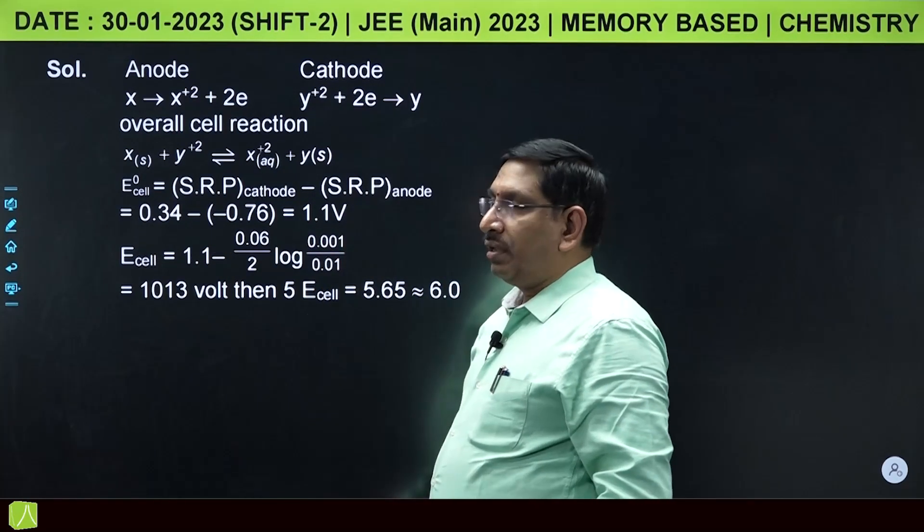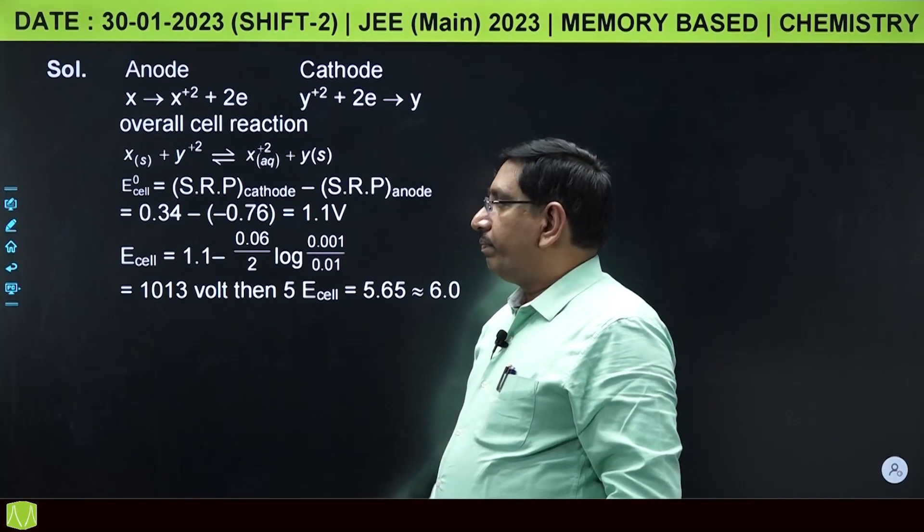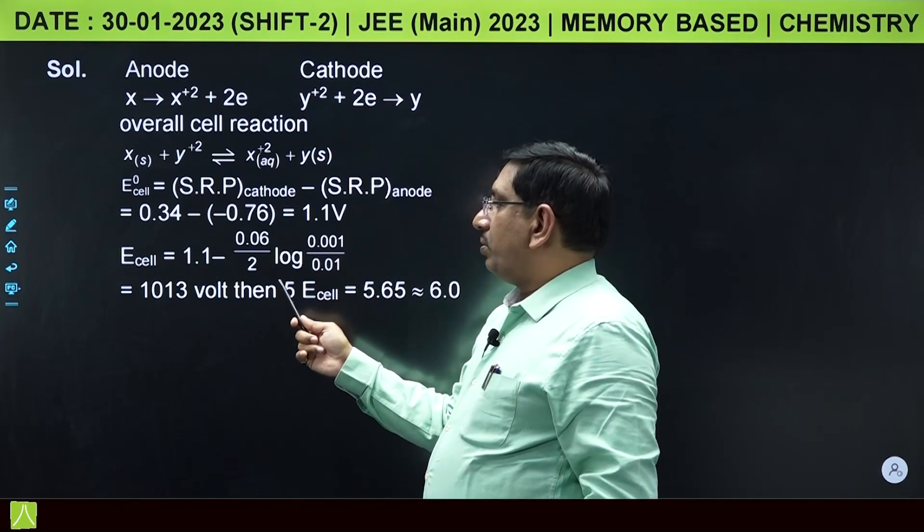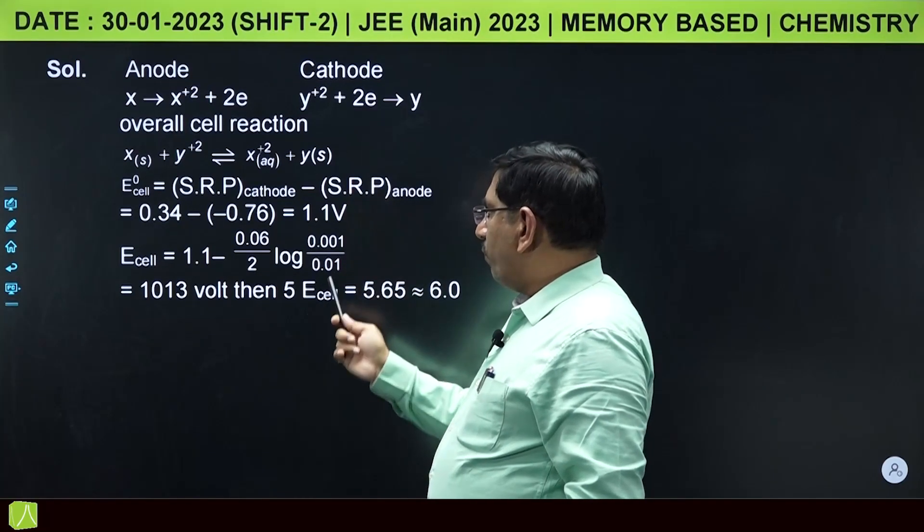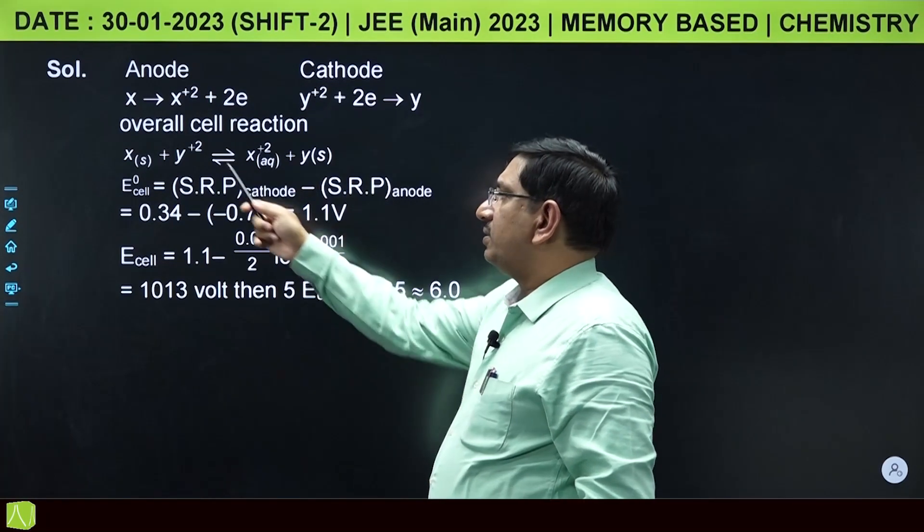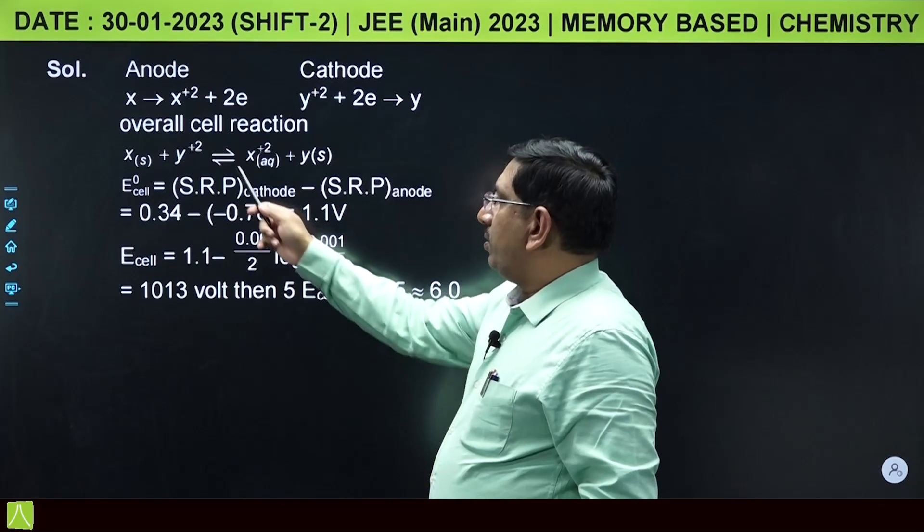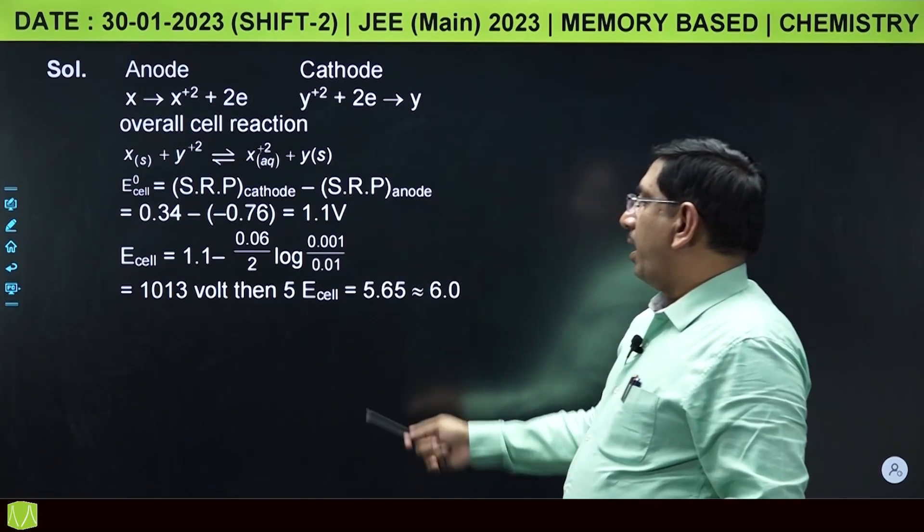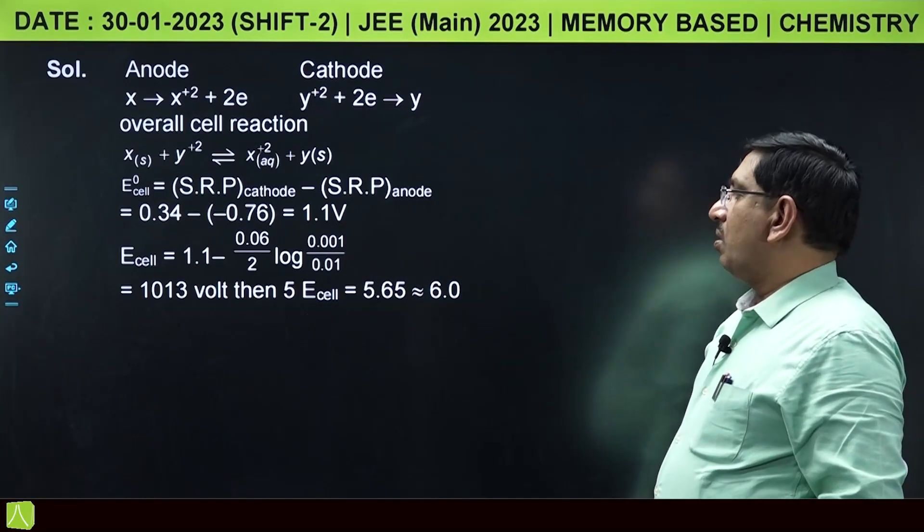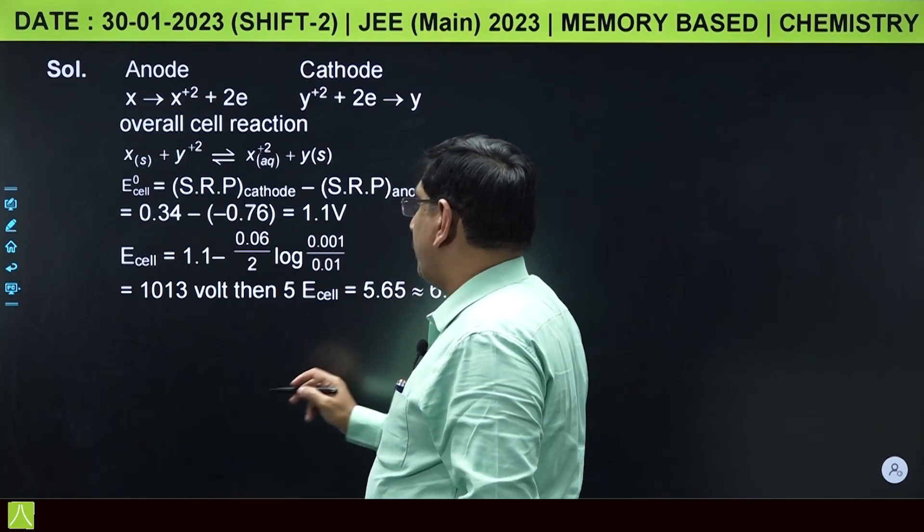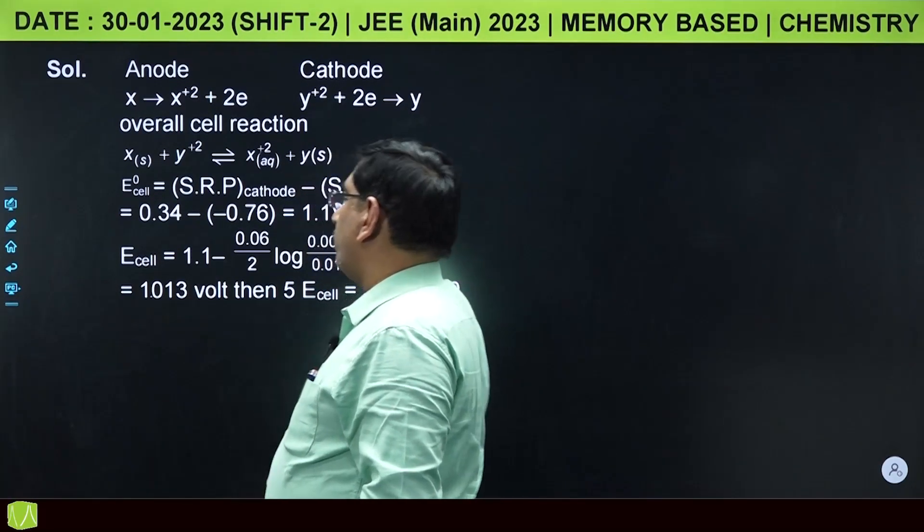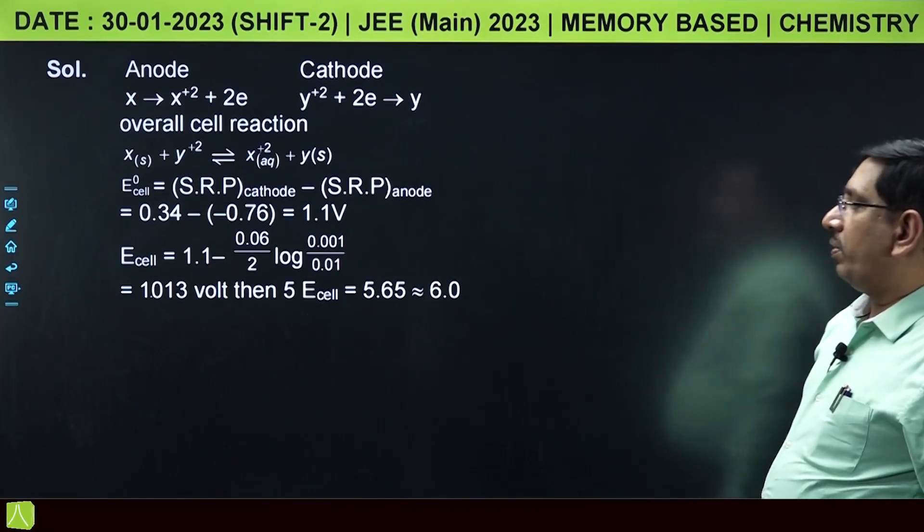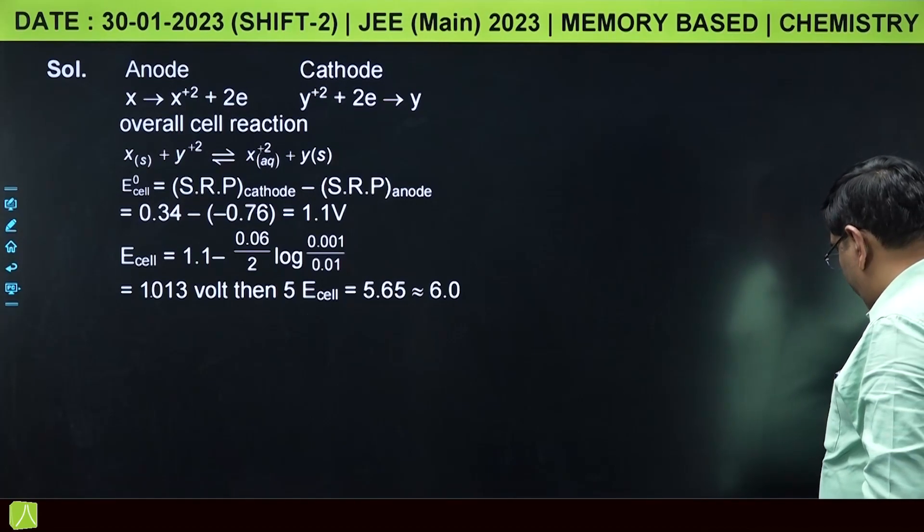On substitution, you get 1.1 volts. E cell equals E naught cell minus 0.06 by 2 log x plus 2 concentration upon y plus 2 concentration. Putting these data, you get 1.013 volts. 5 E cell equals 5 times 1.013 volts. On calculation and rounding off, it equals 6.